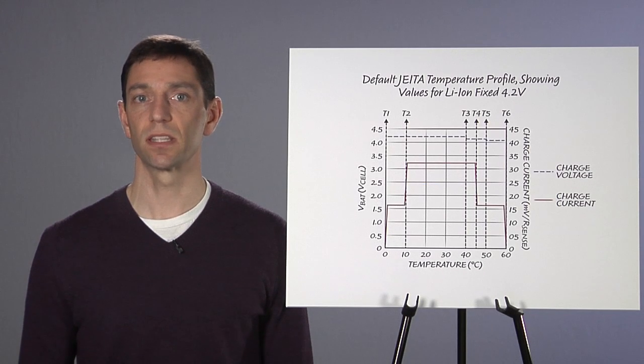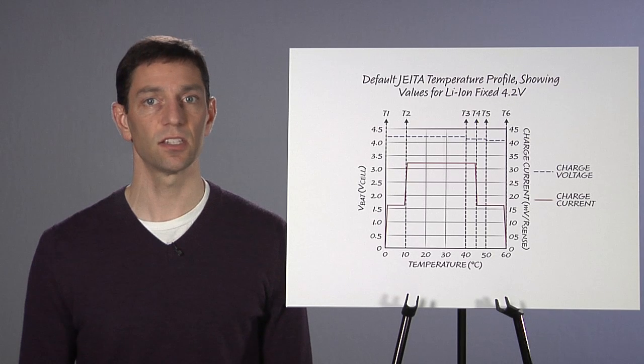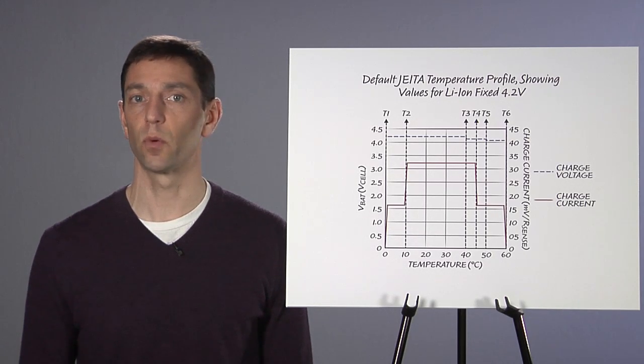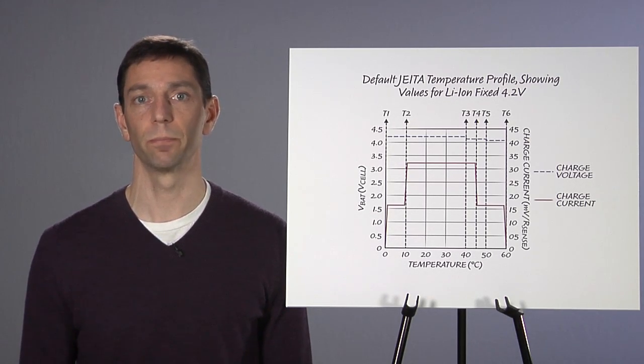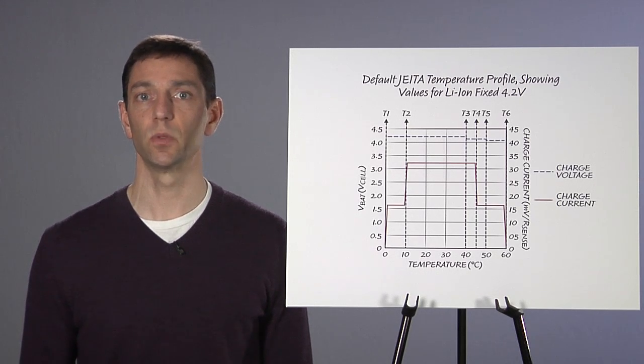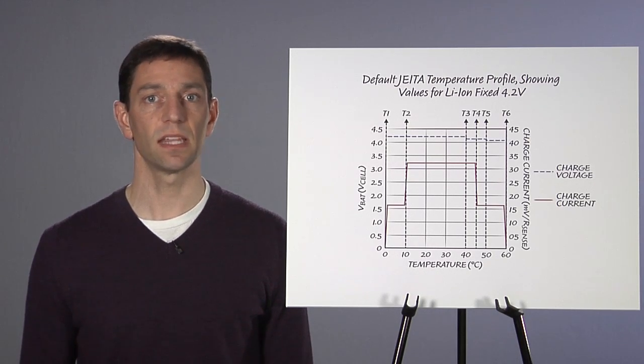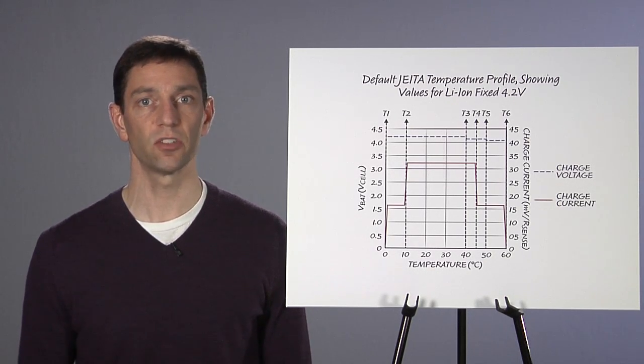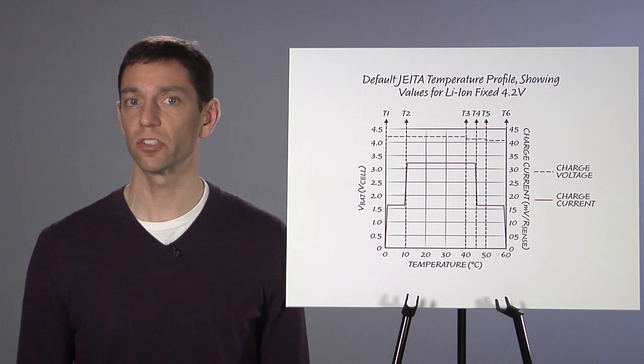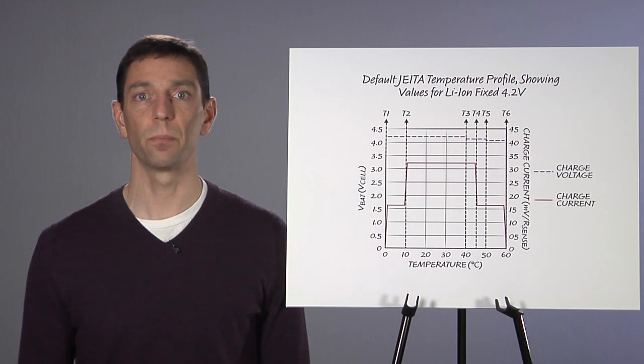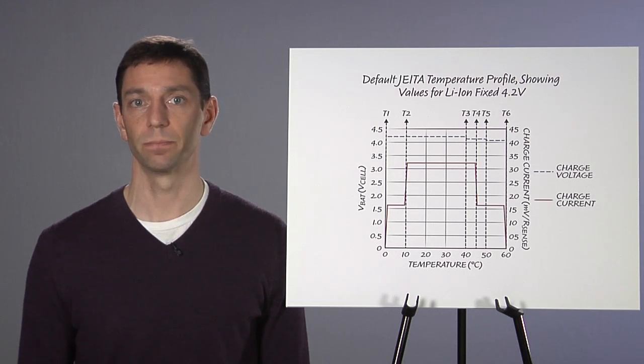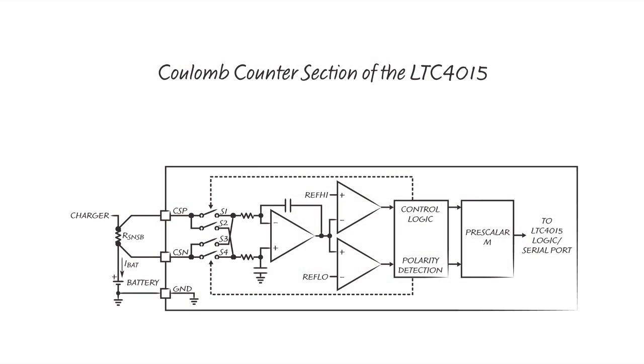In order to adjust the temperature set points, it is necessary to communicate with the LTC4015 using its I2C serial port. In addition to being able to adjust charge parameters, this same serial port is used to read information from the Coulomb counter, monitor system parameters, program parameter limits for the alert system, and read status information. Most of the information available comes from two dedicated pieces of internal hardware, a precision Coulomb counter and a 14-bit ADC.